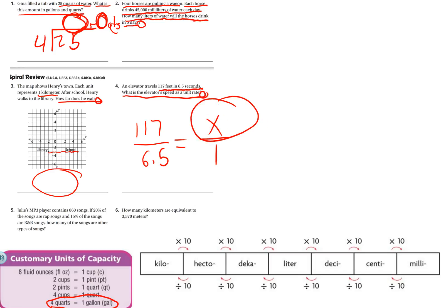All right, Julie's mp3 player contains 860 songs. If 20% of the songs are rap songs and 15% are R&B songs, how many of the songs are other types of songs? Well, 35% are other types of songs. She has a total of 100%, always, always a hundred percent.